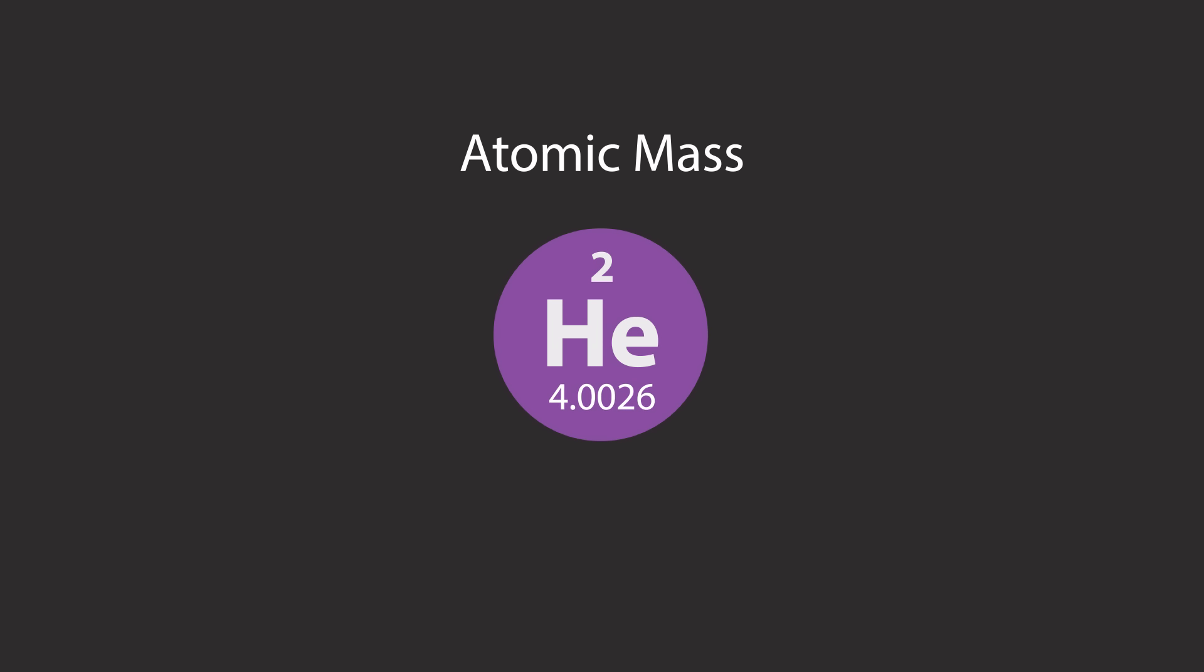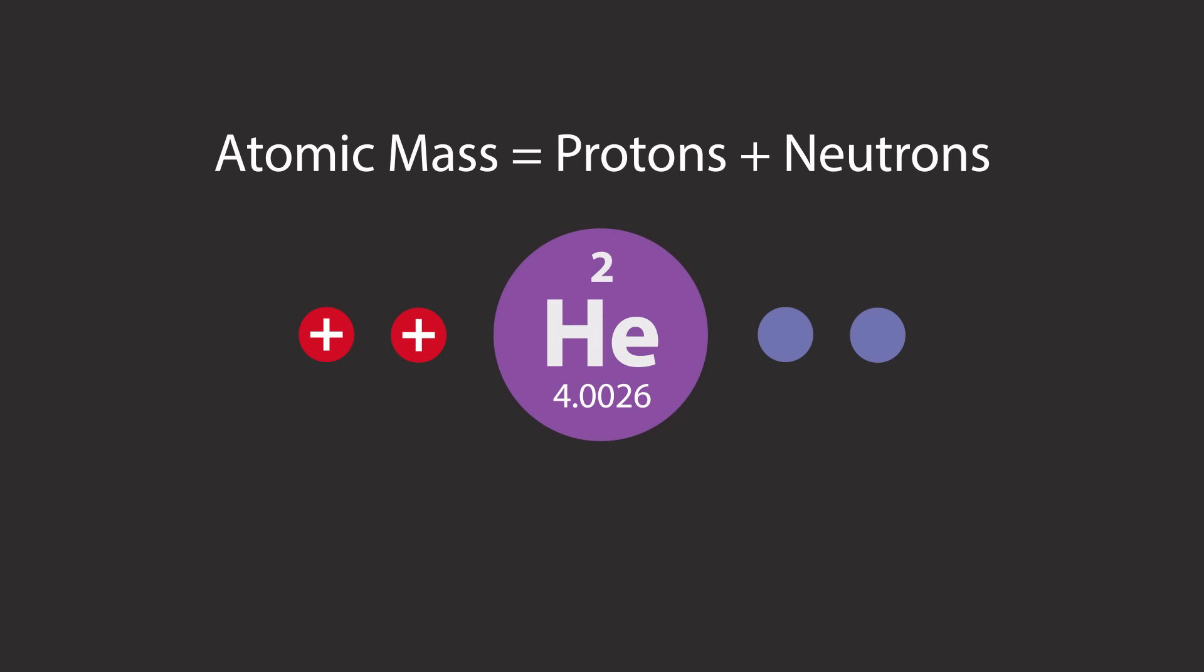The atomic mass, represented here by the larger decimal value, can tell us how many protons and neutrons are present in the nucleus of an atom for any given element.